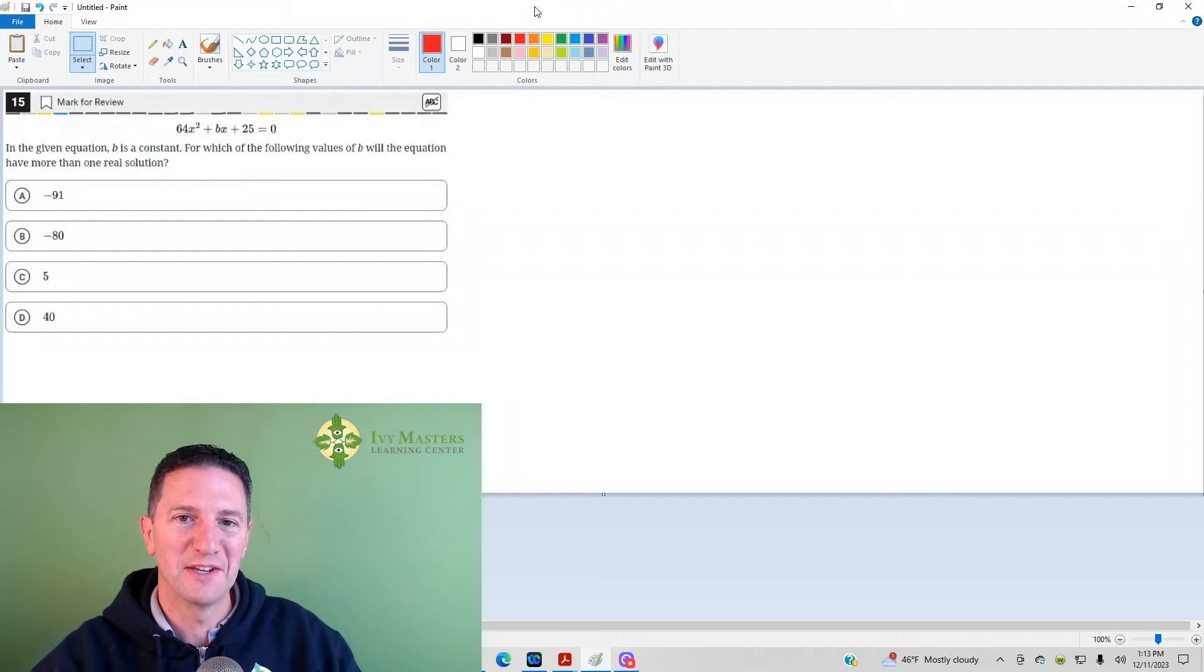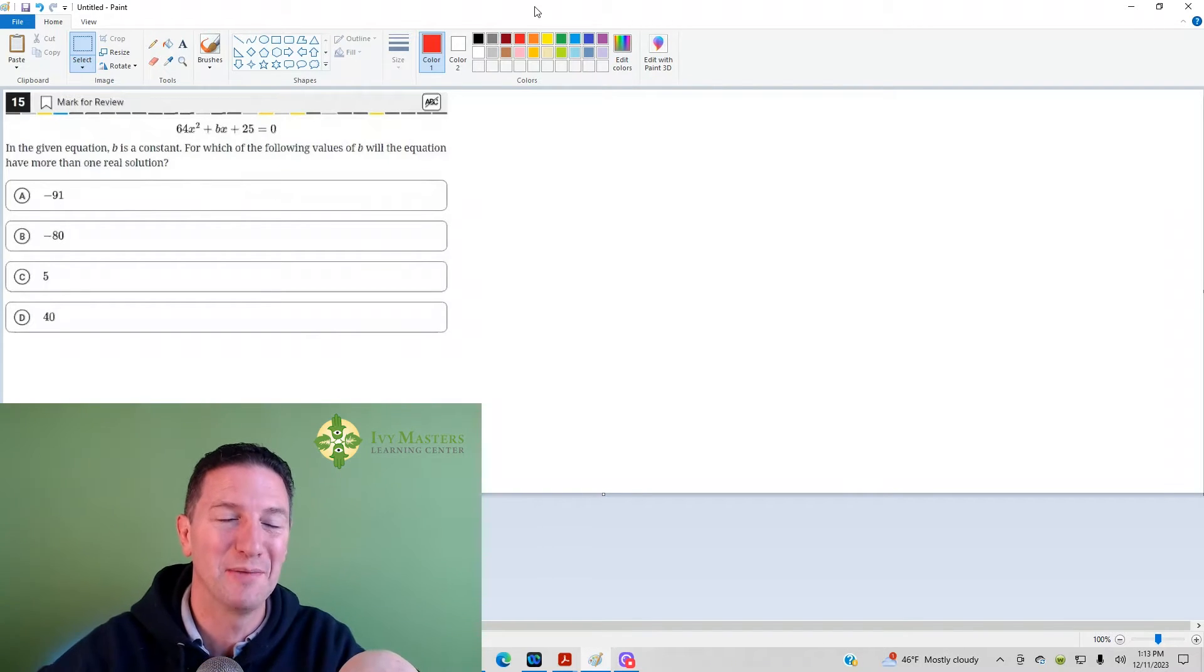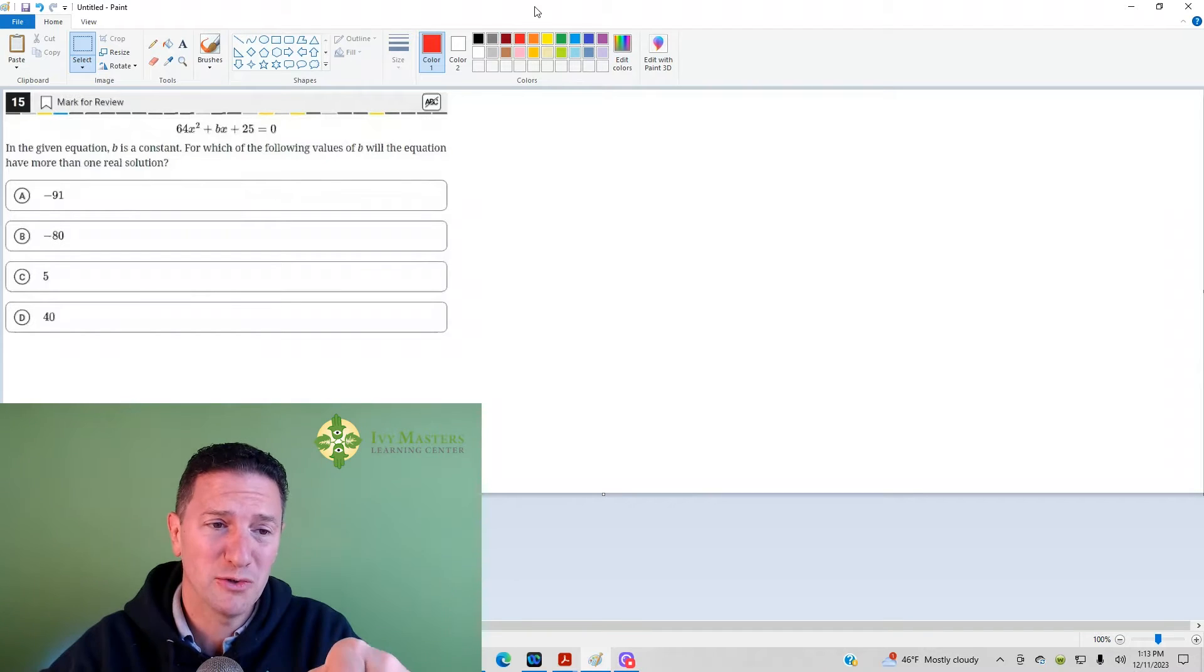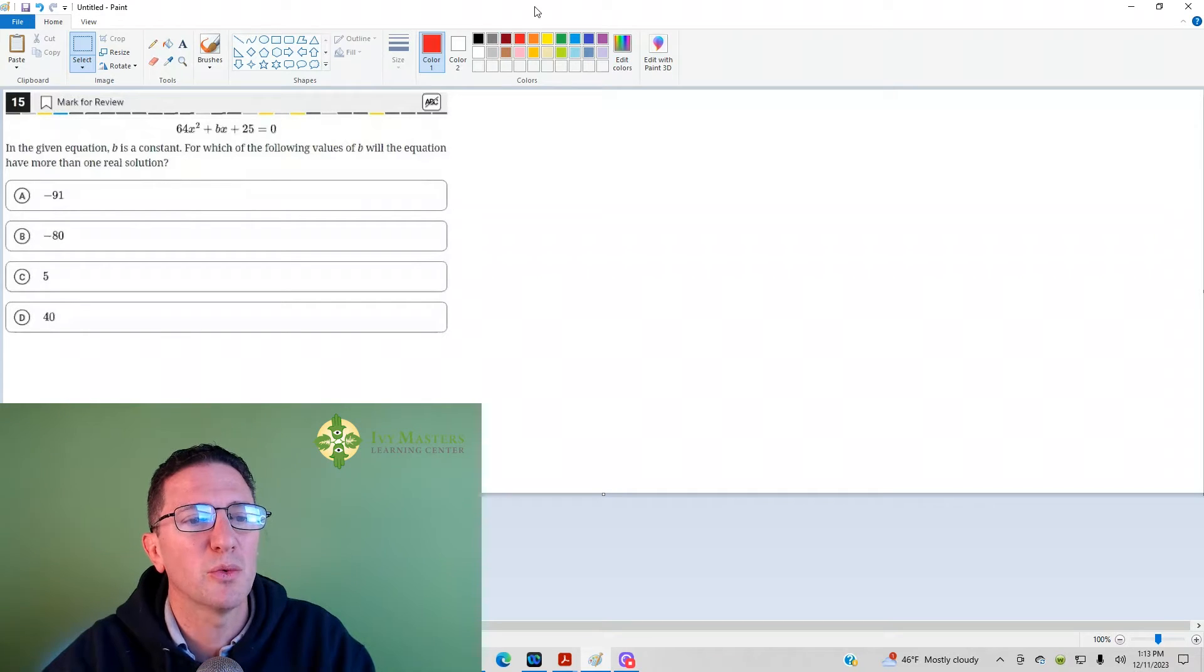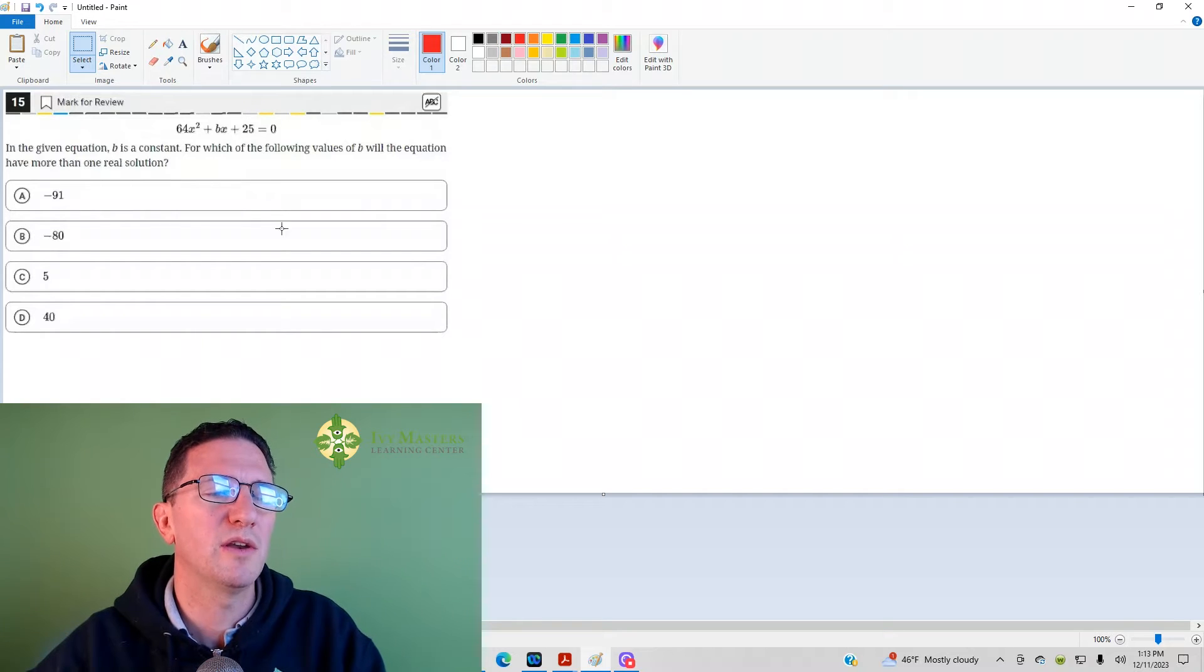Hi, I'm Paul Vesolka, Ivy Messengers Learning Center and ivmessengers.com. Today we're going to look at the 15th question from the Digital SAT Test 1 Module 2. Number 15 reads: given an equation, B is a constant, for which of the following values of B will the equation have more than one real solution?